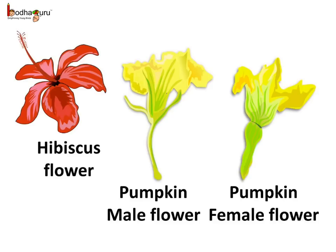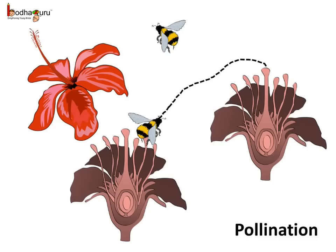Now let us understand why the flower needs to attract insects. When the colour of the petals or the scent of the flower attracts an insect, it sits on the flower. During that time pollen grains may stick to its legs or body. When this insect goes to another flower of the same kind, or sits on the same flower again, the pollen grains may get transferred to the stigma. This process is known as pollination — the transfer of pollen grains to the stigma of the pistil.